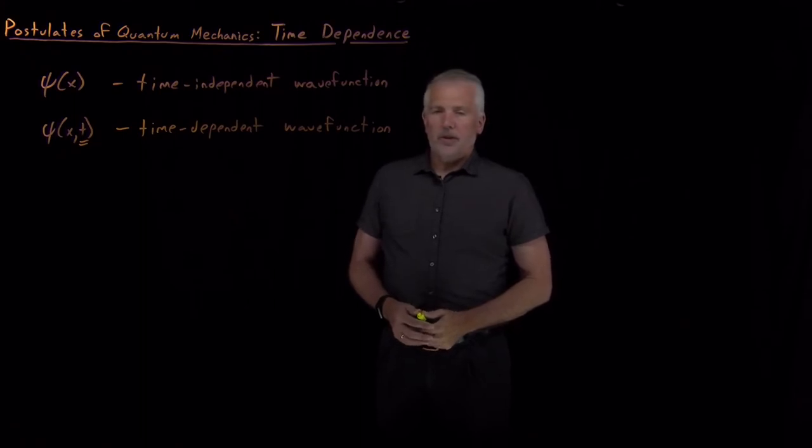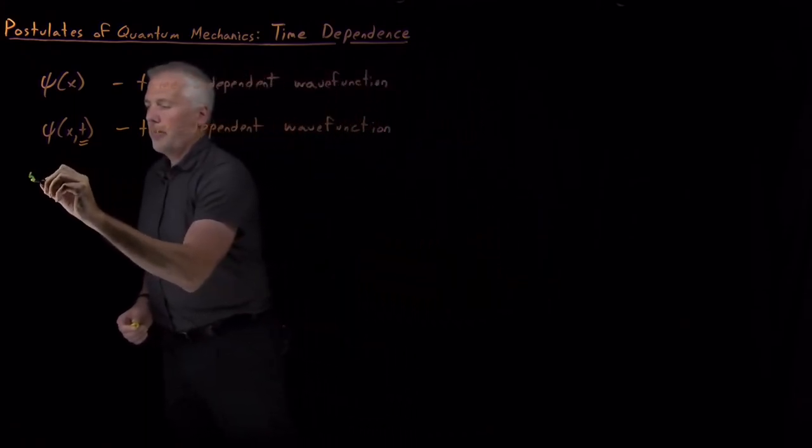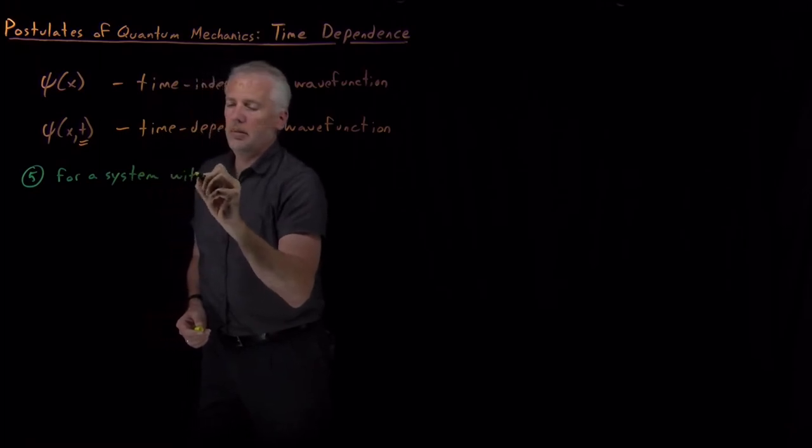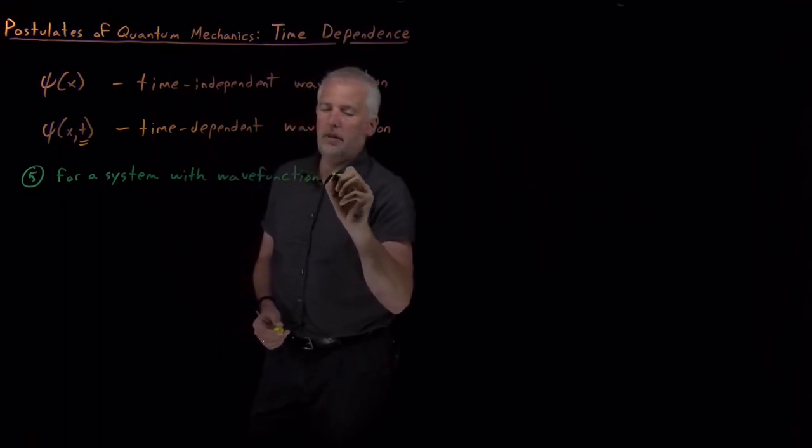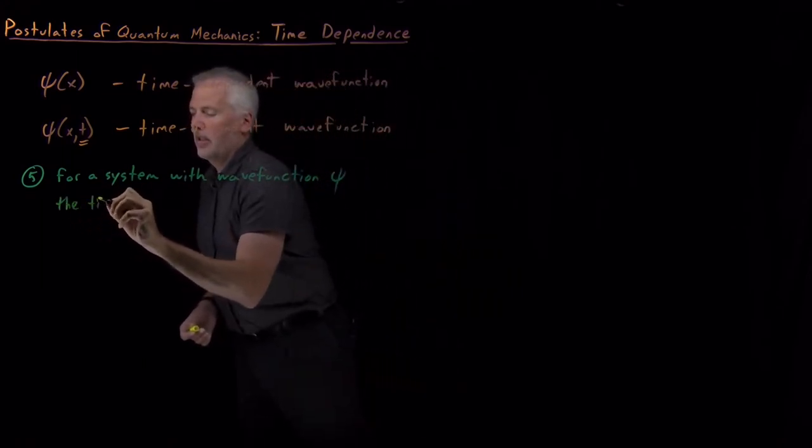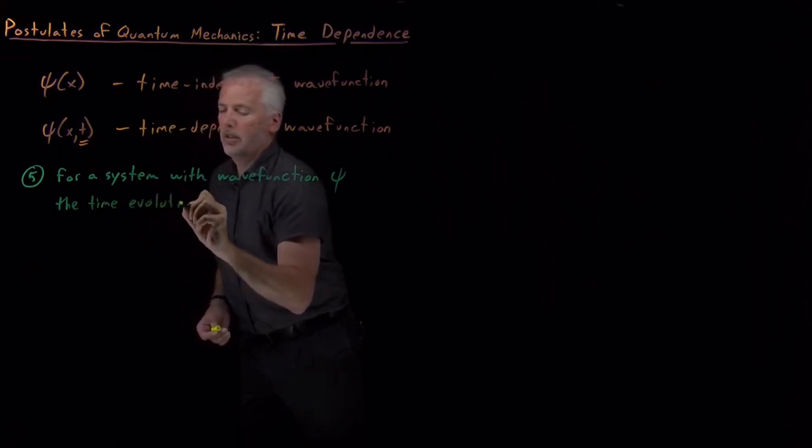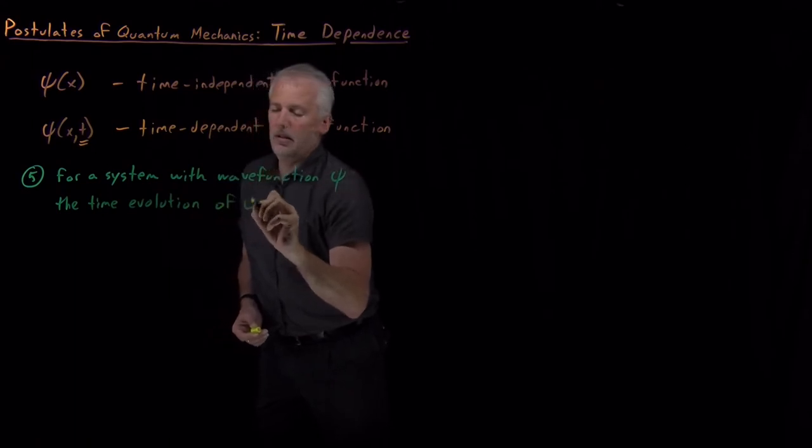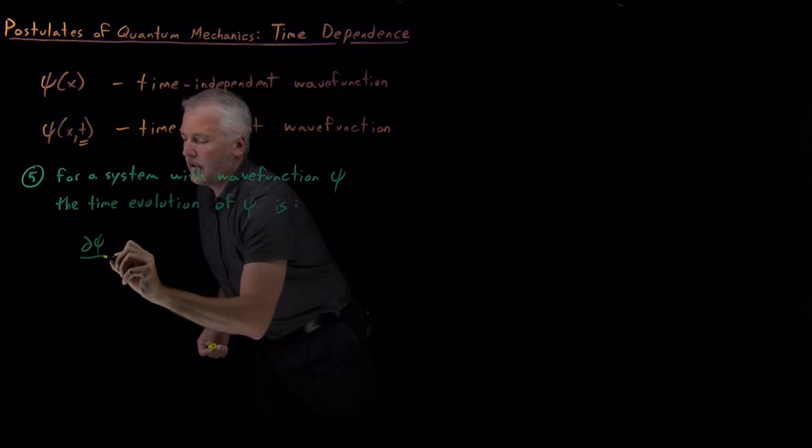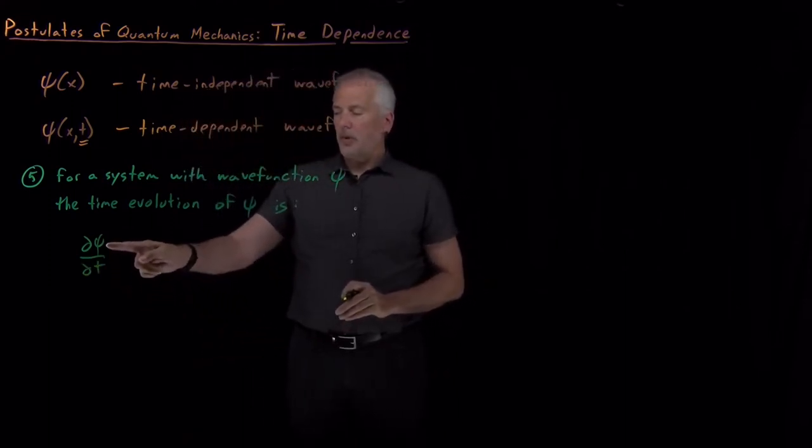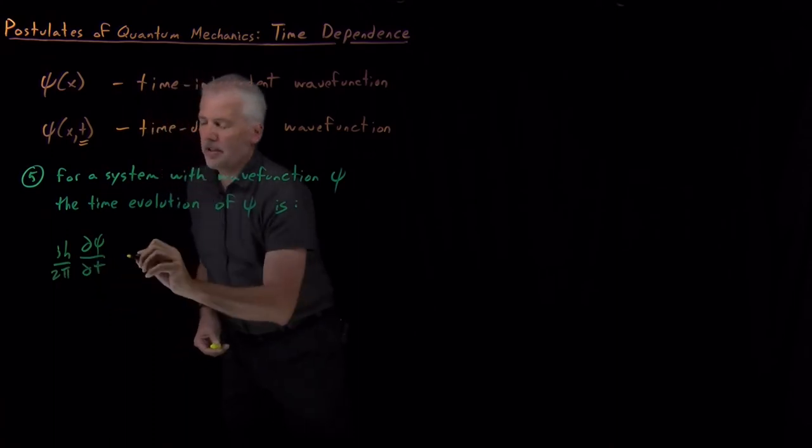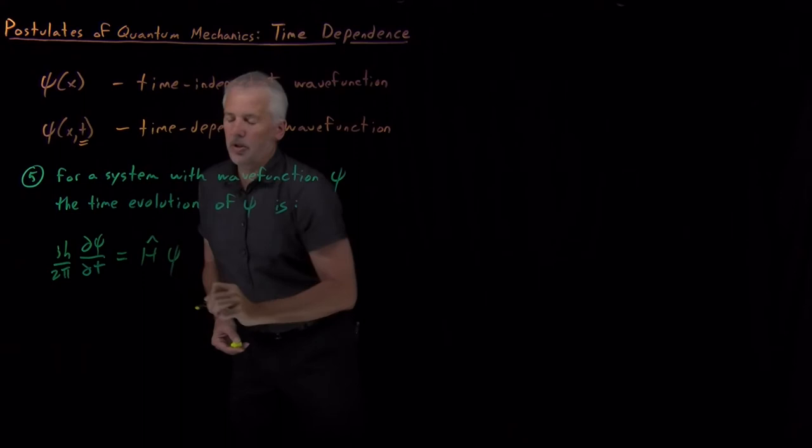So, if we want to understand how it is that the wave function changes as time goes on, then we need the fifth postulate of quantum mechanics, which tells us, for a system with a particular wave function, if it's in a wave function described by psi, then the time evolution or the way that the wave function changes with time is telling us something about how the wave function changes with time, the rate at which it changes with time. And, in particular, if I take i times h over 2 pi, that collection of constants, that happens to equal the Hamiltonian acting on the wave function.